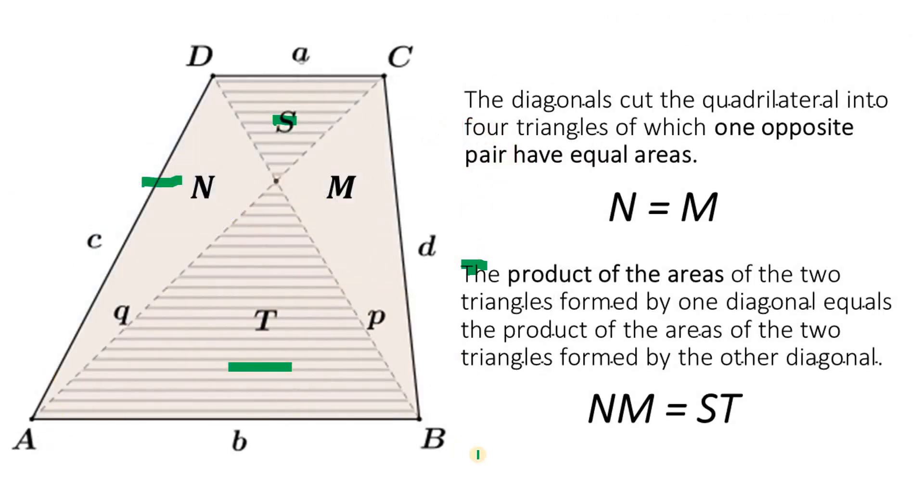So given this trapezoid ABCD, the diagonals cut the quadrilateral into four triangles of which one opposite pair have equal areas, namely N and M. Also, the second concept is the product of the areas of two triangles formed by one diagonal equals the product of the areas of two triangles formed by the other diagonal, namely N times M equals S times T.